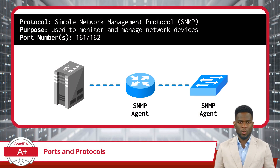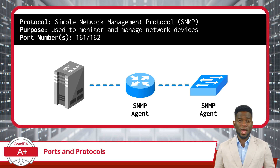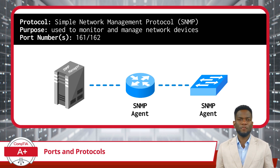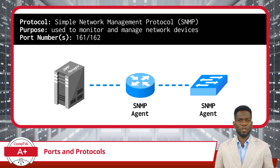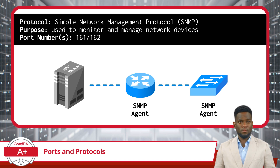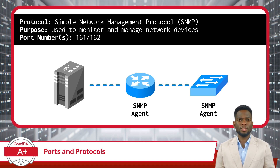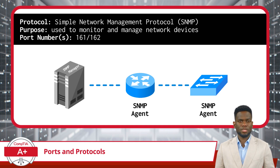Next we have SNMP, or Simple Network Management Protocol. This protocol is used for monitoring and managing network devices, and is instrumental in gathering information from and configuring devices like routers, switches, servers, and printers. SNMP is particularly valuable in large-scale network environments where constant monitoring is necessary for maintaining network health and performance. It primarily operates on ports 161 and 162 for sending requests from the manager to managed devices and receiving responses.